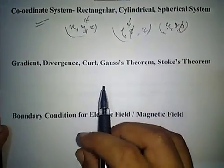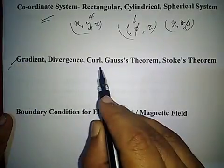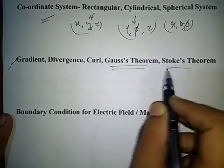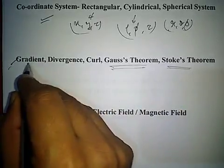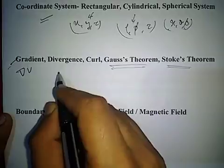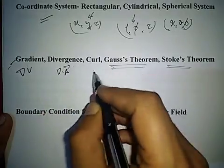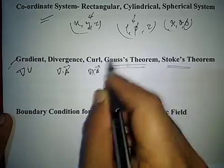The next very important topic from which direct questions are asked includes gradient, divergence, curl, and the famous Gauss theorem and Stokes theorem. Gradient is del V of a scalar function, divergence is del dot vector A, and curl is del cross vector A.